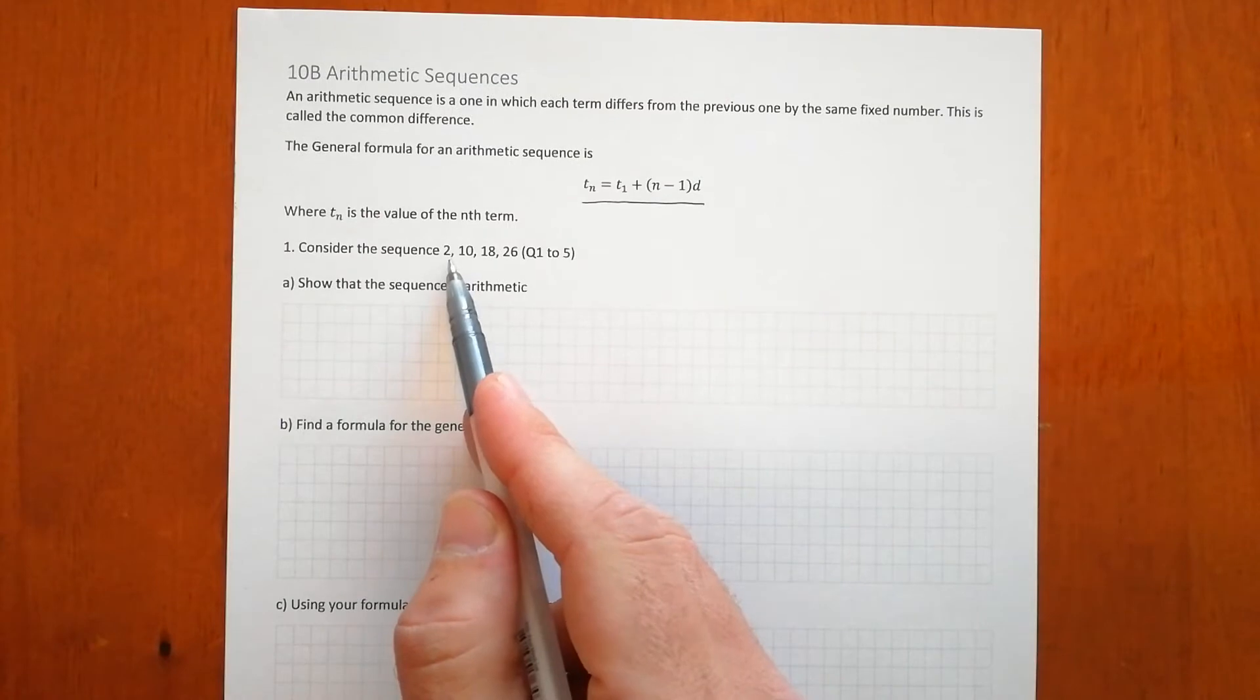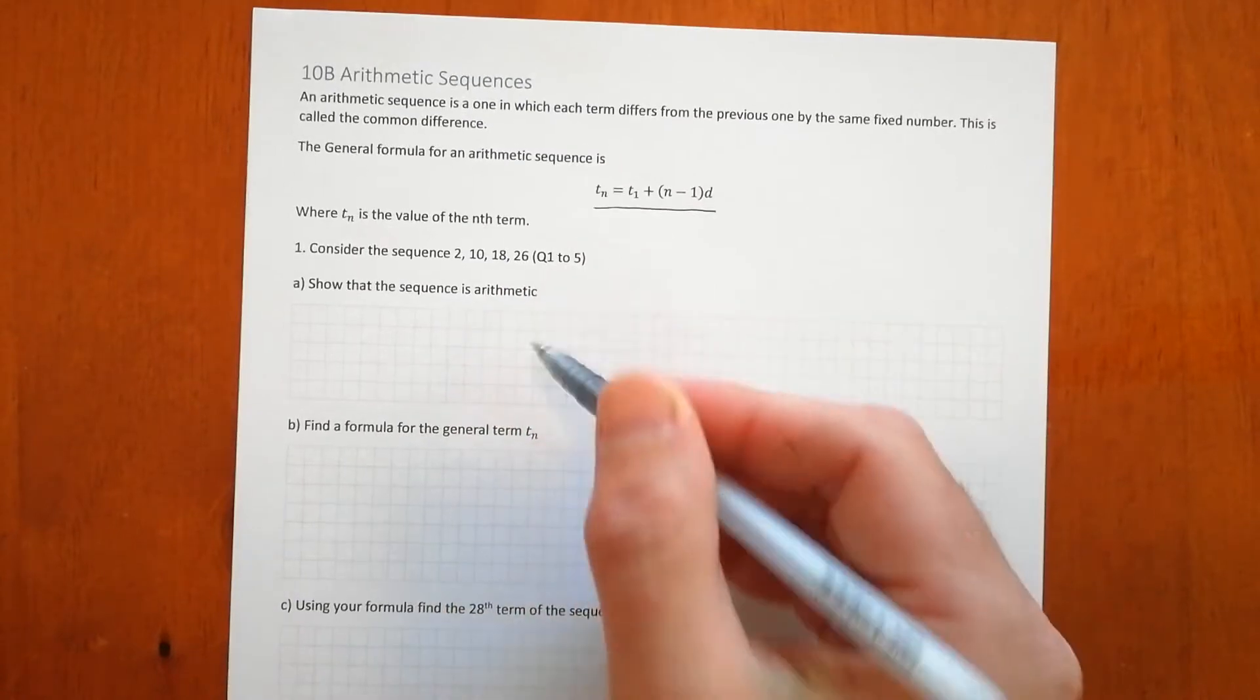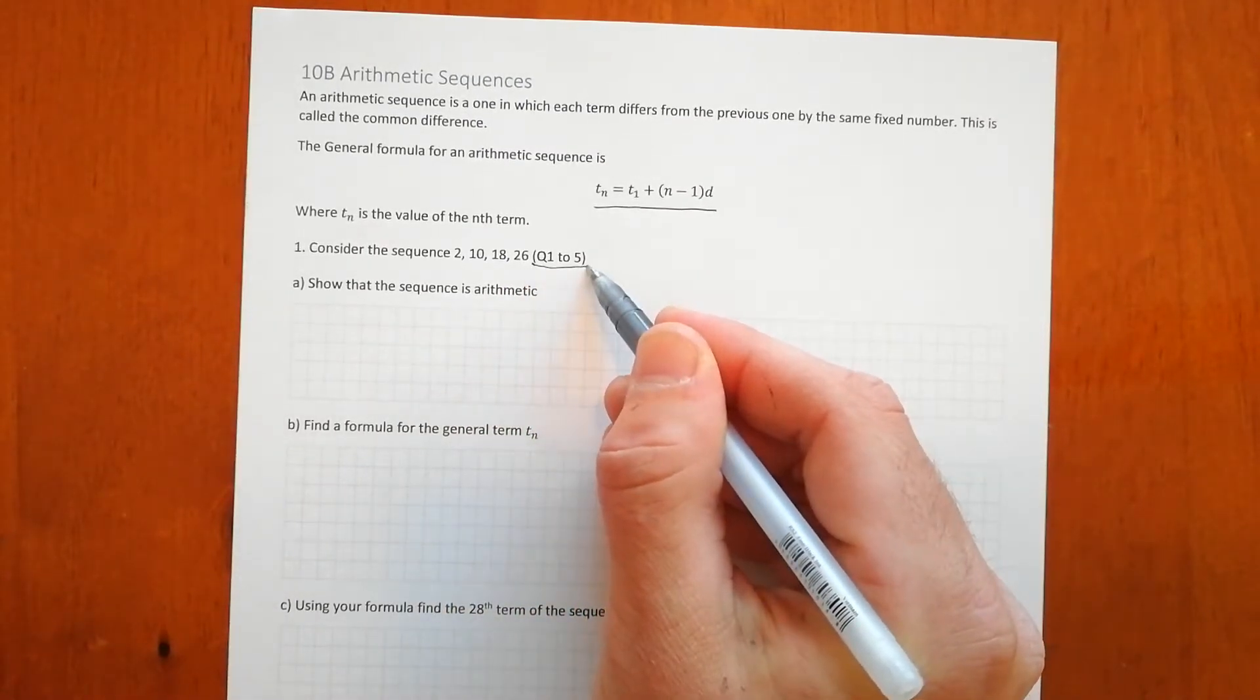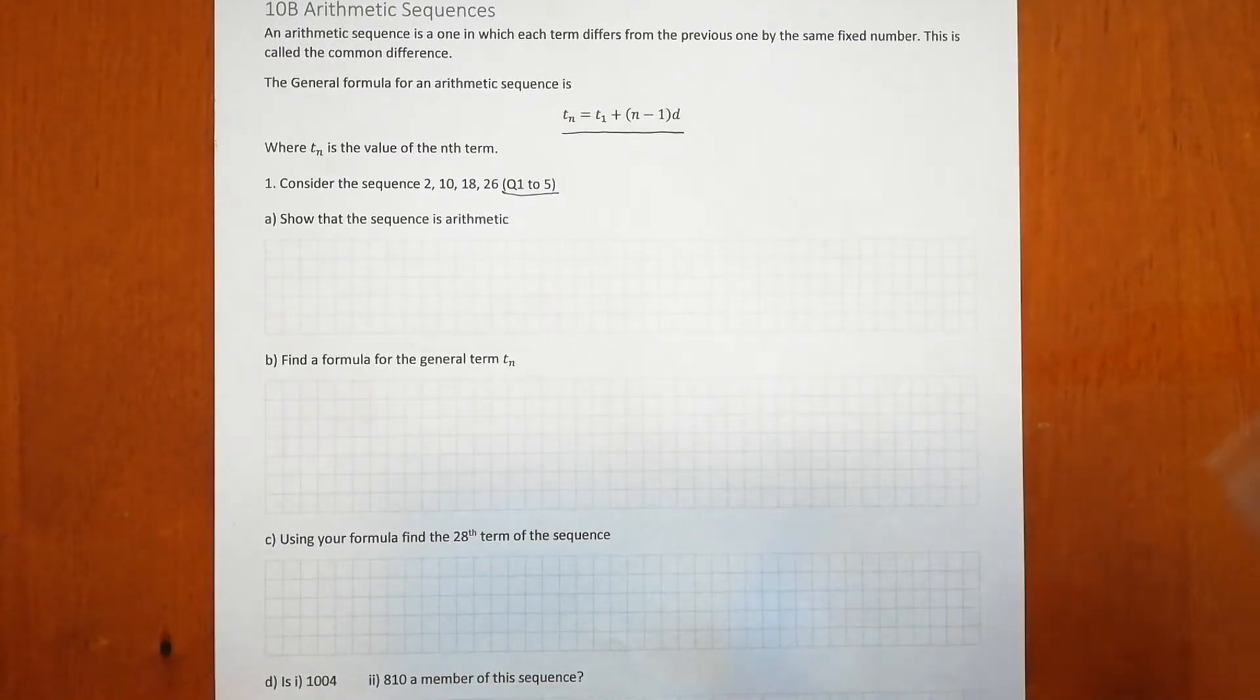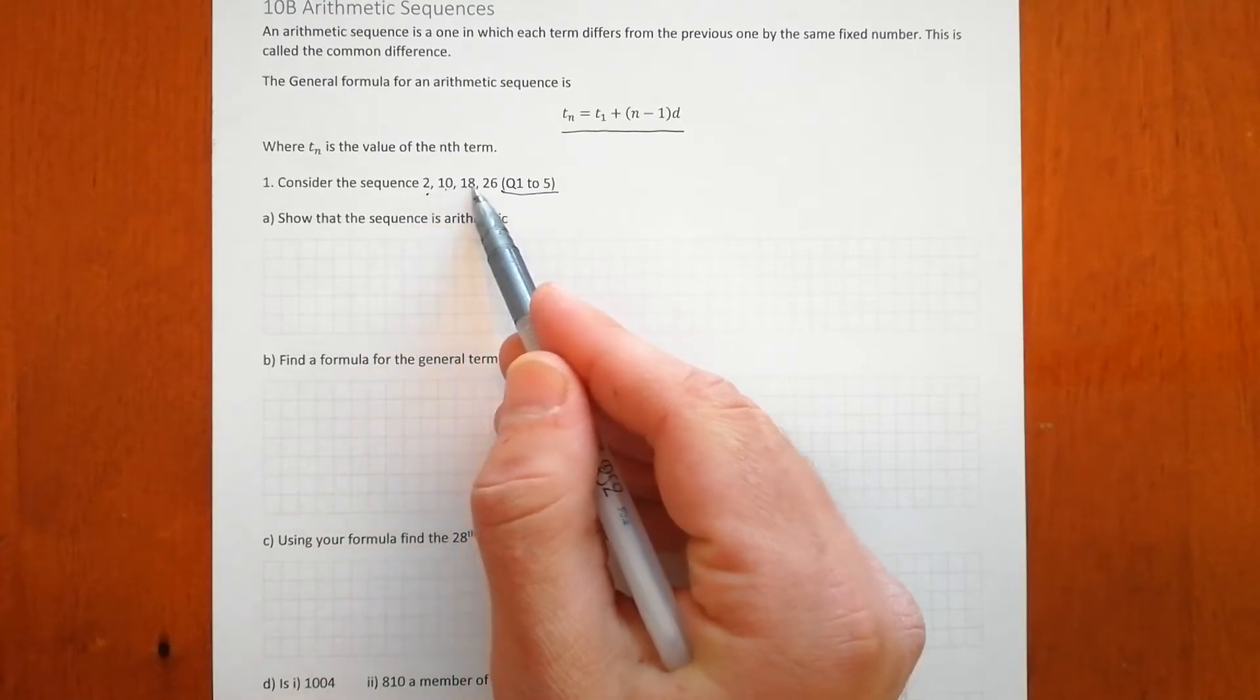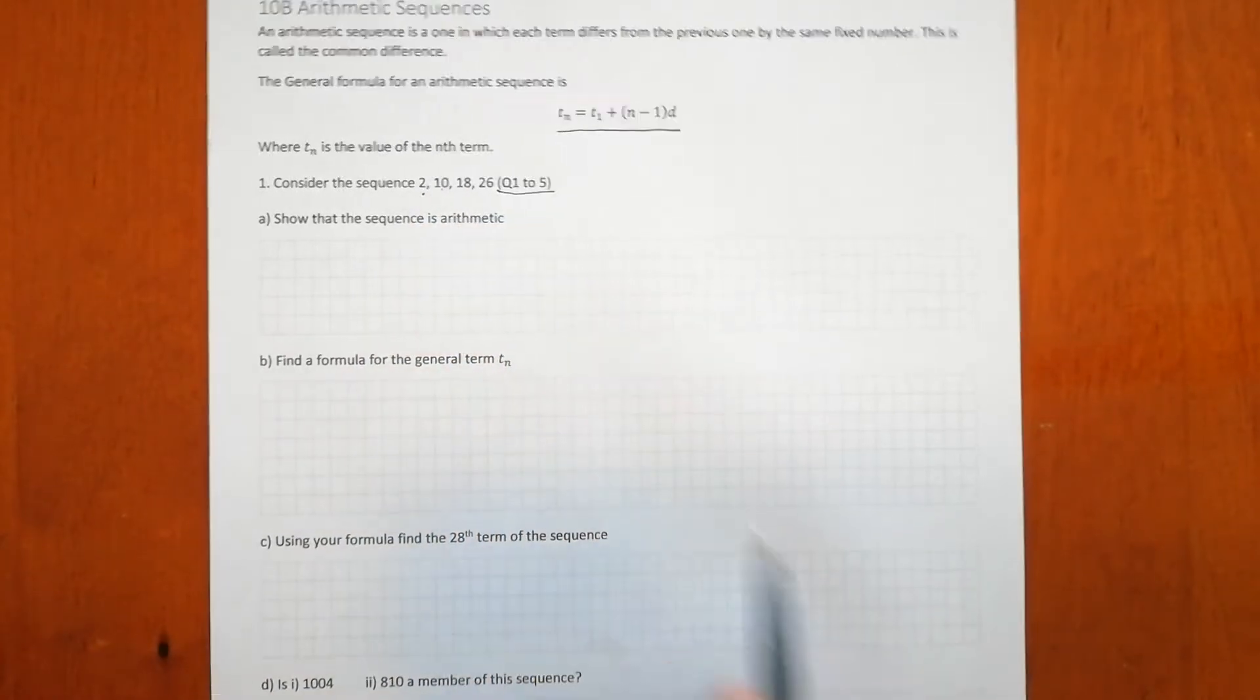So here we've got a sequence: 2, 10, 18, and 26. That there is just letting you know this refers to questions 1 to 5 in the textbook. This question here that we're going to unpack will allow you to do questions 1 to 5. So that's the sequence 2, 10, 18, 26. And we can see it starts at 2 and it's increasing by 8 each time.